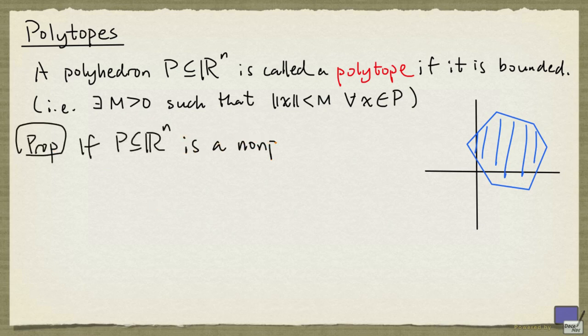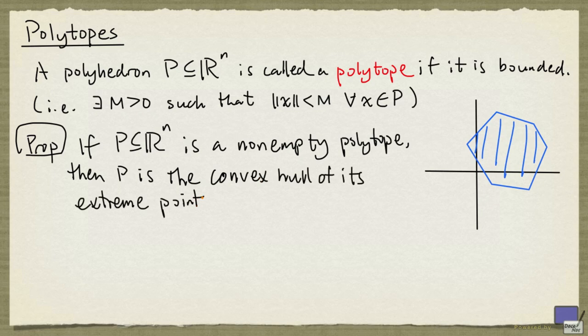If P in R^n is a non-empty polytope, then P is the convex hull of its extreme points. So for example here, we see that this polytope is given by the convex hull of these extreme points.